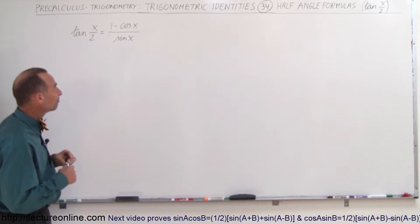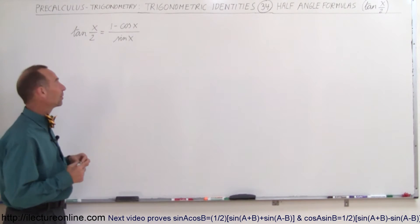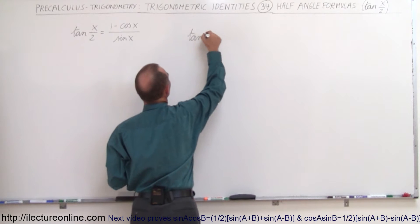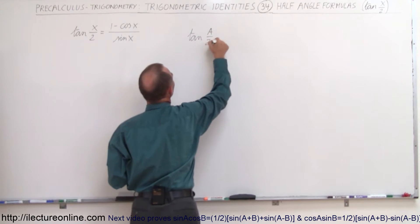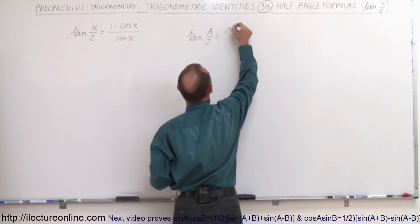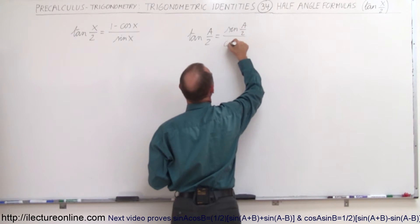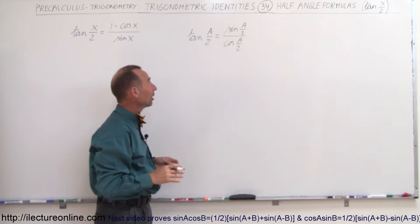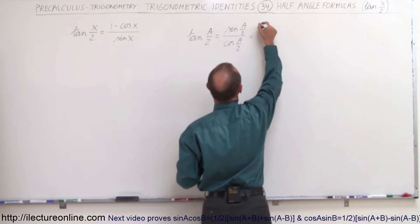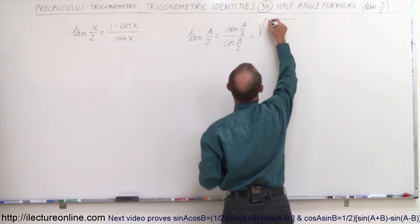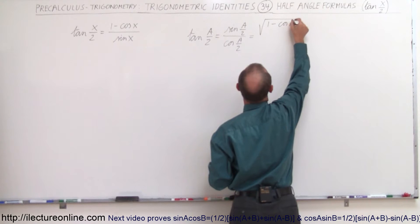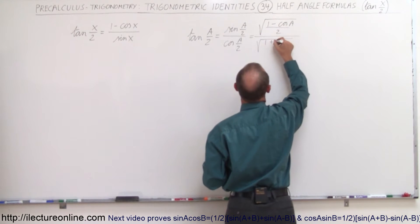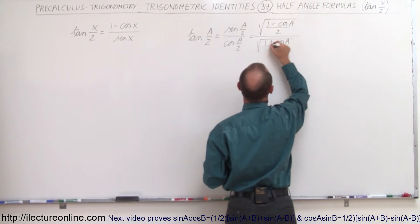We use a slightly more interesting trick to get to this particular equation. What we're going to do here is show that the tangent of a/2, a half angle, can be written as the sine of the half angle divided by the cosine of the half angle. From the previous videos, this is equal to the square root of (1 minus cos(a))/2 divided by the square root of (1 plus cos(a))/2.